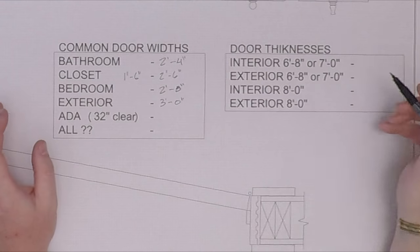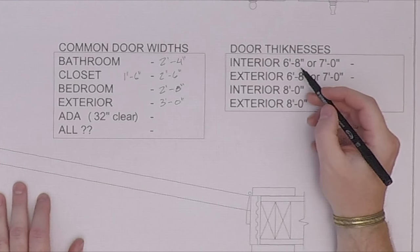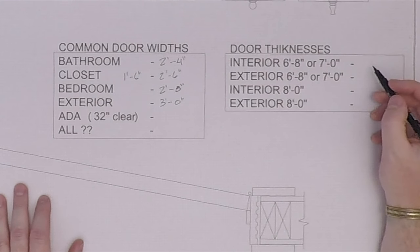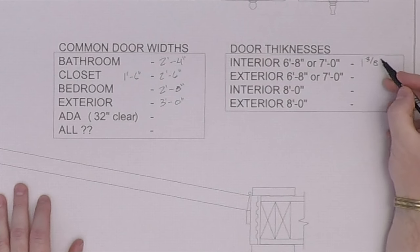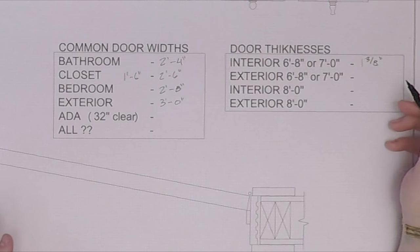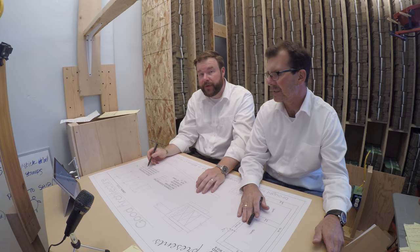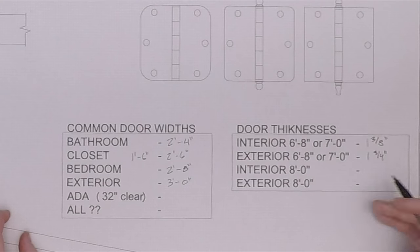Now let's talk about some of the thicknesses associated with doors. There are two basic thicknesses — give or take three overall. On your interior bathroom and closet doors, if they are six-foot-eight or seven-foot high, those will be one-and-three-eighths inches thick. Most of the time on the same height, you will do one-and-three-quarter inches thick on the exterior door.